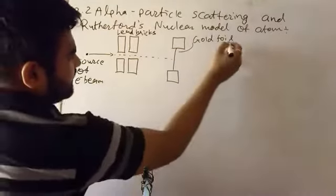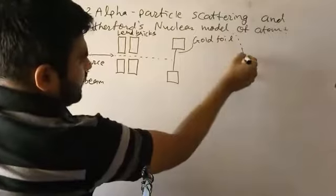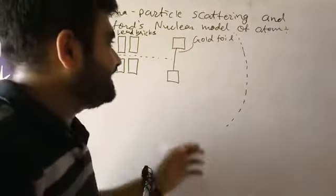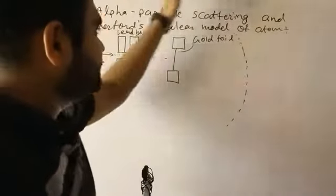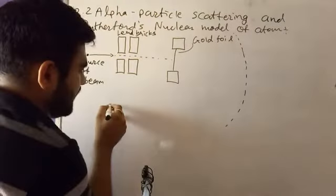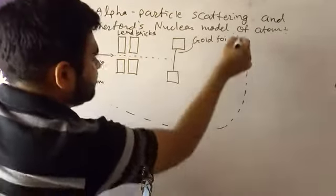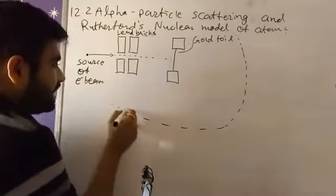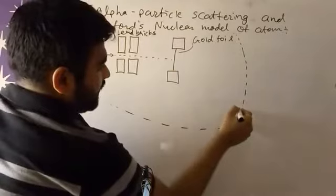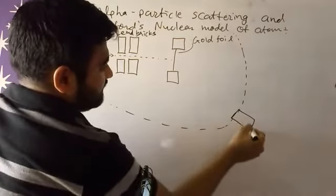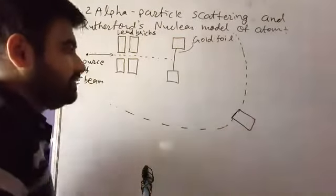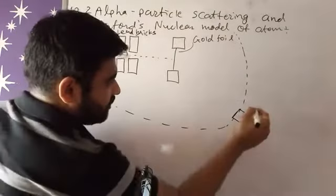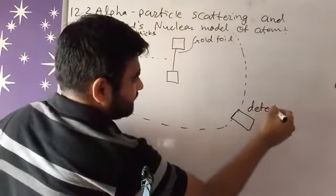Now what happens basically, here I am putting one traveling microscope which can rotate throughout this surface, up to like this curve surface. Right? So this traveling microscope can rotate from any surface, and the material we use in this detector - because this is called detector.